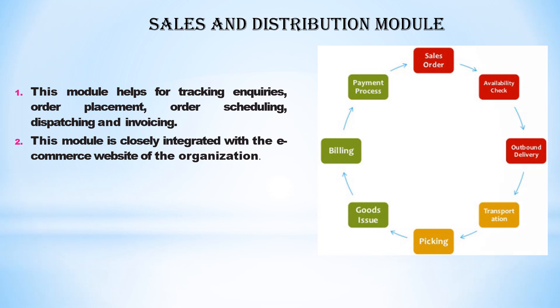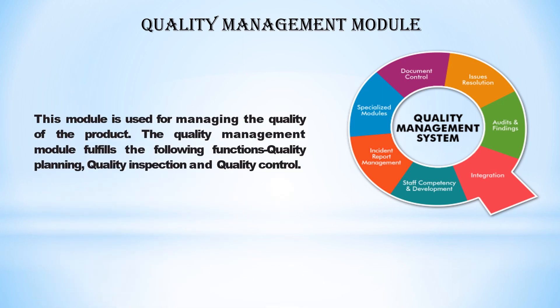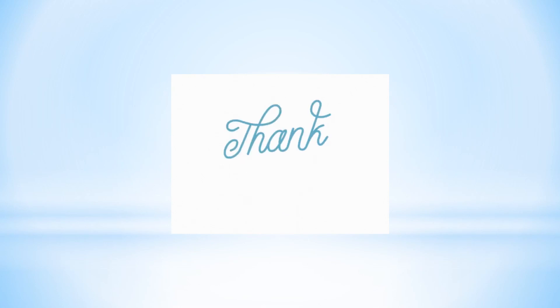Next is the last but not least — quality management module. Here you have all your quality aspects: what is the quality of the product, what is the specification, how is the staff, how are the complaints, how is the development, how is the incident handling. All these things are related to this module, and quality inspecting — all these issues are controlled in this model. I hope you are able to understand the concept of ERP. Thank you, Jazakallah khair — please subscribe to my channel.